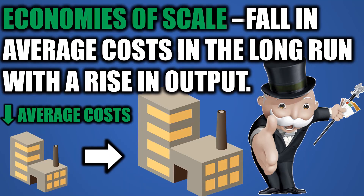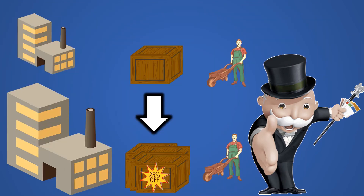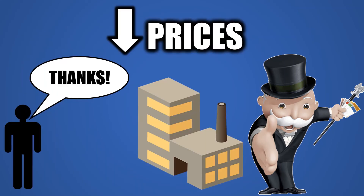Economies of scale is the fall in average costs in the long run with a rise in output as a business expands — like a monopoly — where they can take advantage of these lower average costs. For example, a big monopoly can buy supplies in bulk and get discounts. Hence, through these cuts in costs, monopolies can lower prices for customers.